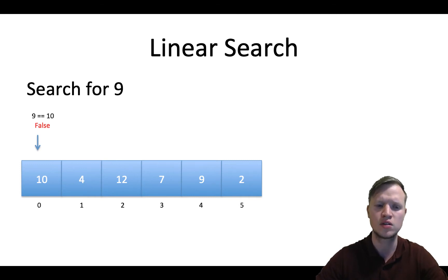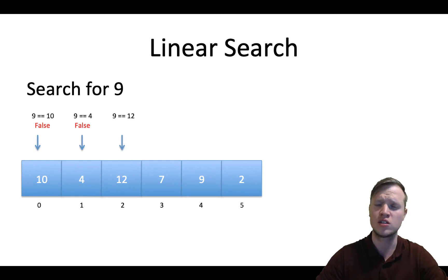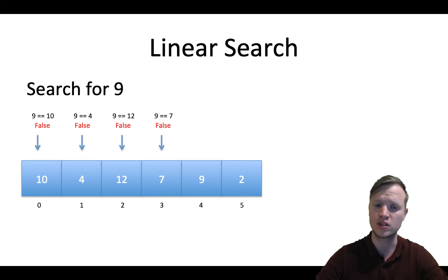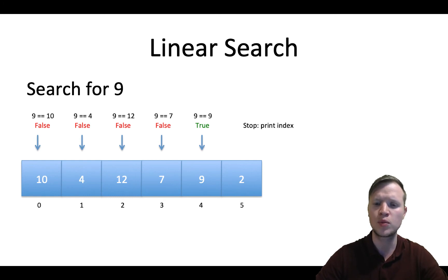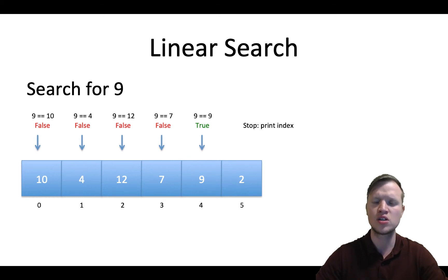We ask: is 9 equal to 4? Also false. Is 9 equal to 12? False. Is 9 equal to 7? Still false. Then is 9 equal to 9? Yes, that is true. When we encounter a true, we stop and print out the index of that given element.